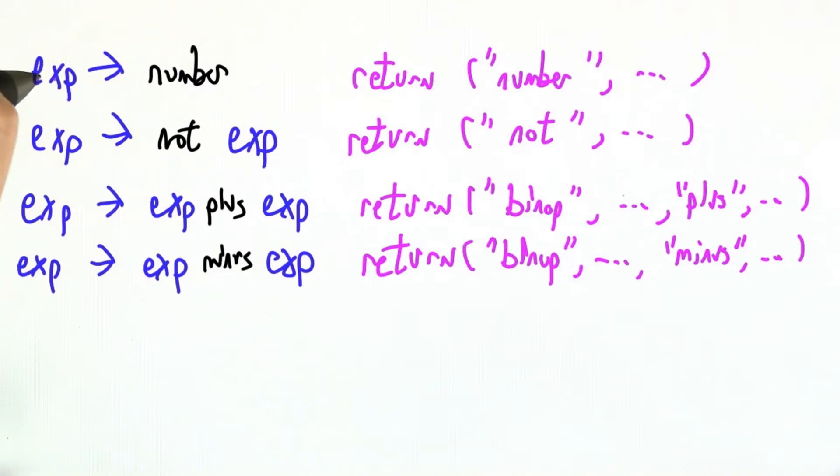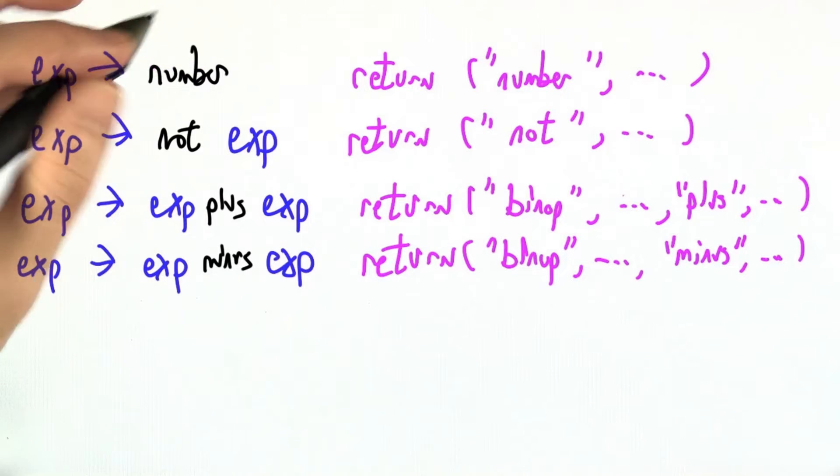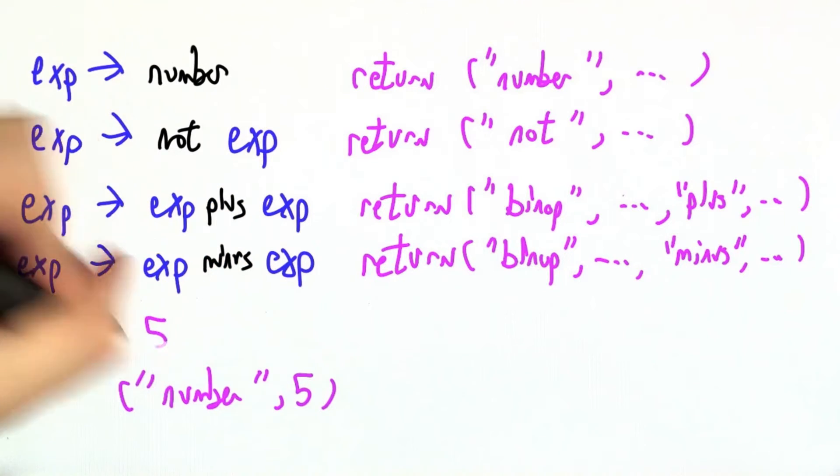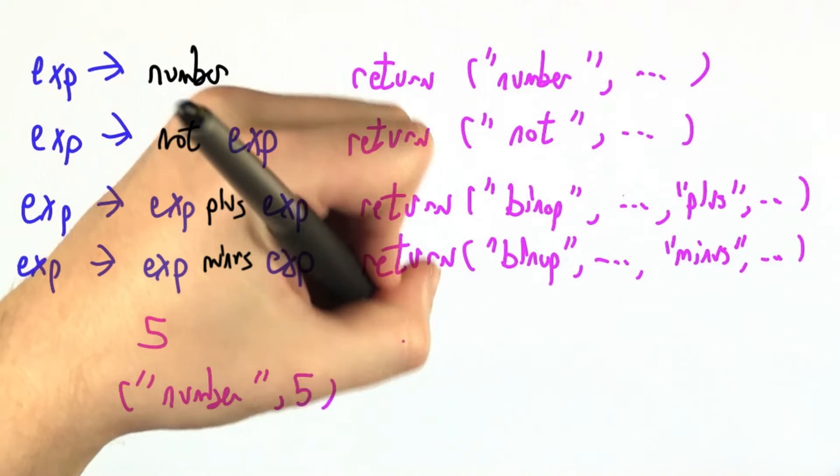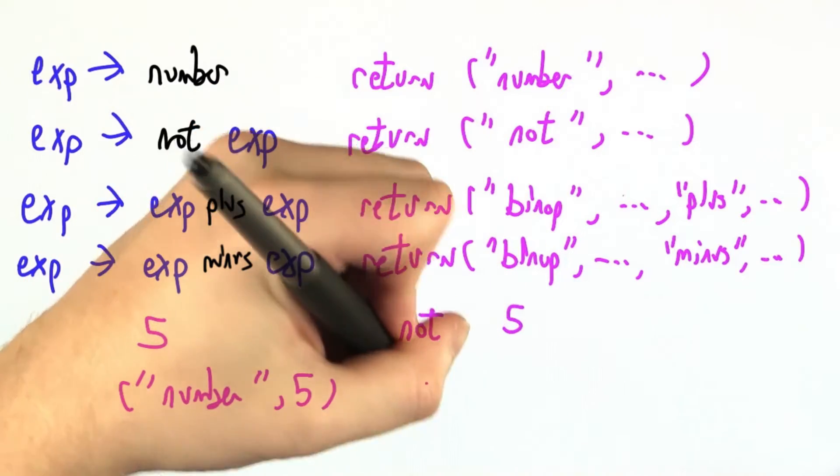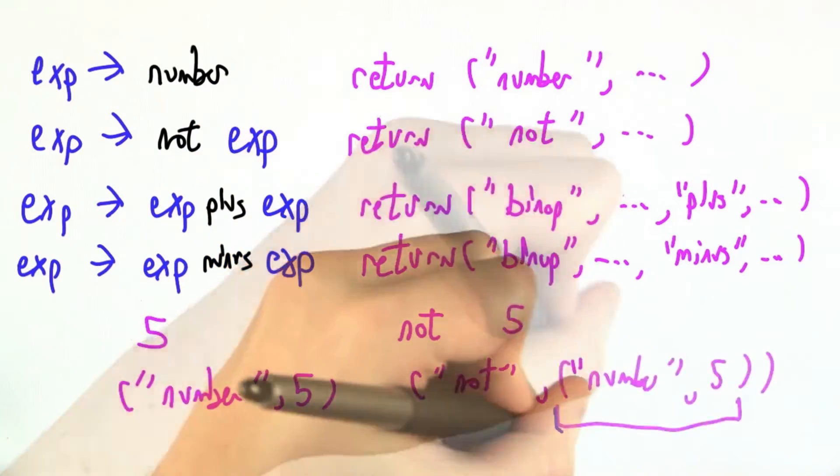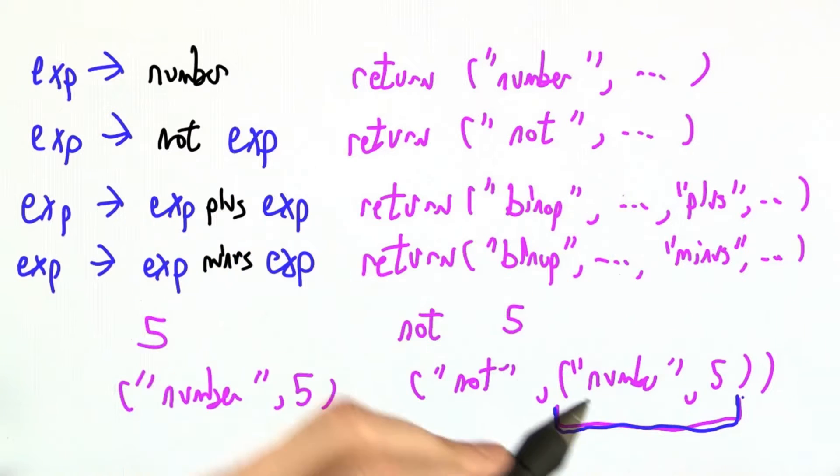So if we end up using this rule expression goes to number, we're just going to return the tuple number 5 if the input was 5. Similarly, if the input is something like not 5, we'll end up returning not of the number 5. Note the nesting.